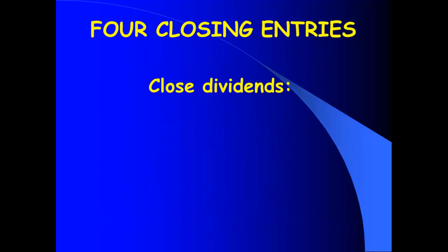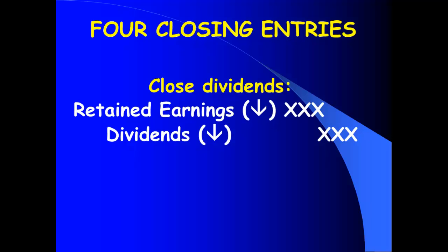The fourth closing entry closes out dividends. Dividends have a debit balance to begin with, so to close out dividends I'm going to credit dividends, and my debit goes to retained earnings. Debiting retained earnings makes it go down — and paying dividends does make retained earnings go down. My first two closing entries closed revenues and expenses into Income Summary. For the last two entries — closing Income Summary and closing dividends — the other part of those entries is retained earnings.